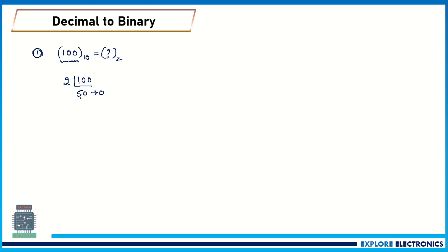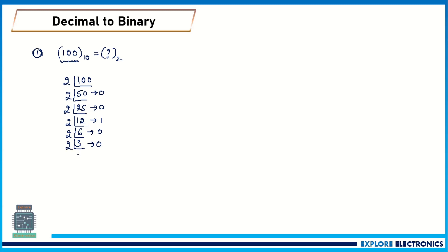We write the remainder and continue dividing. 50 ÷ 2 = 25, remainder 0. 25 ÷ 2 = 12, remainder 1. 12 ÷ 2 = 6, remainder 0. 6 ÷ 2 = 3, remainder 0. 3 ÷ 2 = 1, remainder 1. We now have all the remainders recorded.